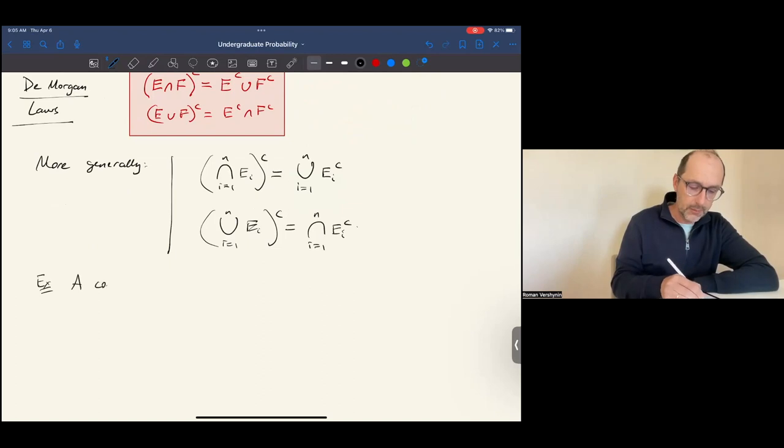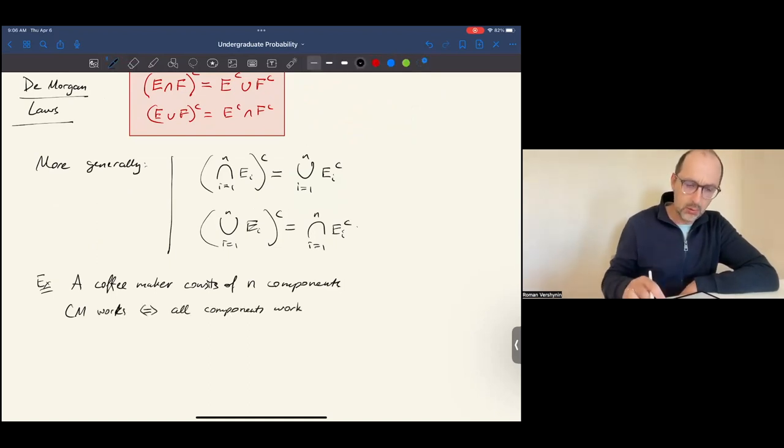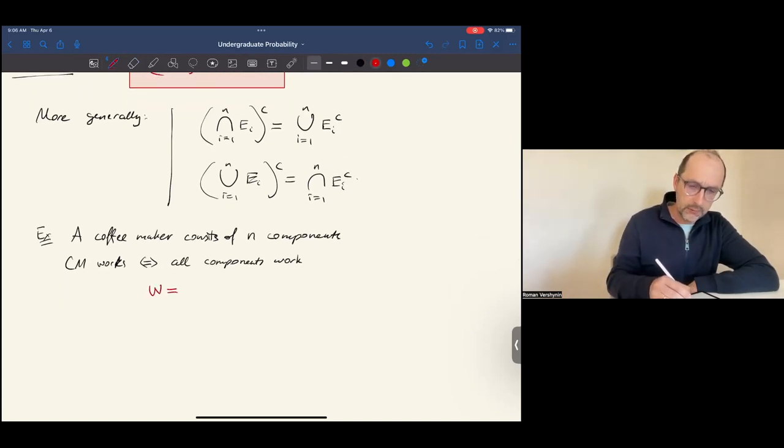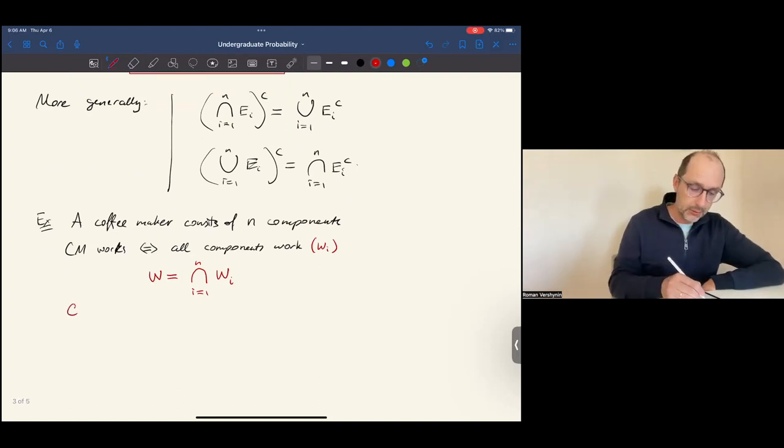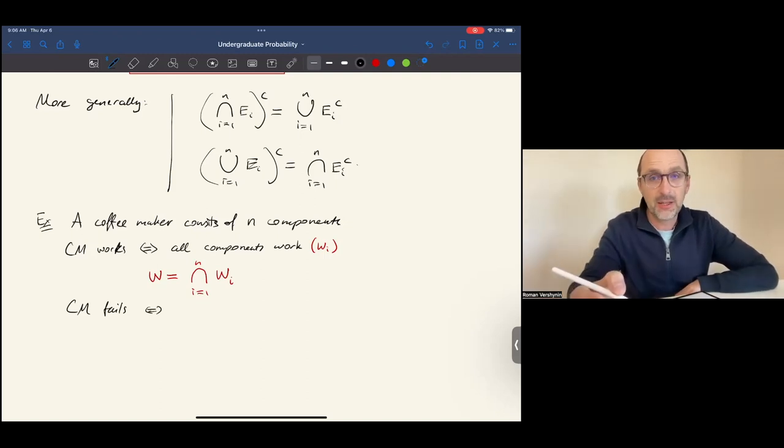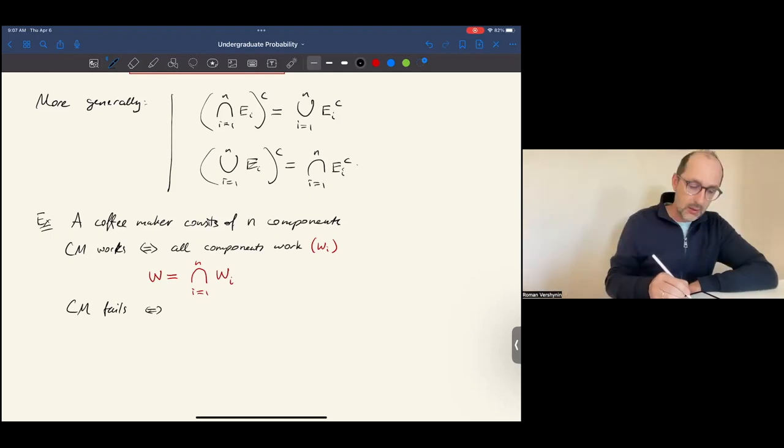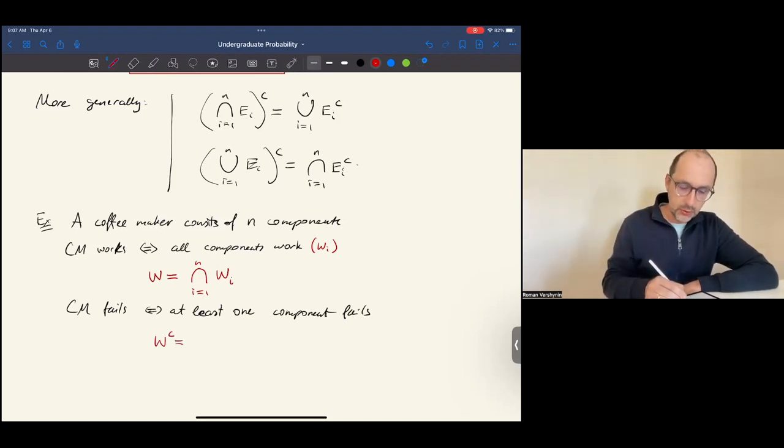Here's an example. Suppose a coffee maker consists of N components. It works if and only if all the components work, which we may denote by saying that it works if the intersection of all of the components Wi work. What does it mean for the coffee maker to fail? The coffee maker fails if and only if, the common mistake will be to say all components fail. But that's not true. The coffee maker fails if at least one component fails. And we can write it as the complement of working, which is a failure, is the union of the failure of the components.